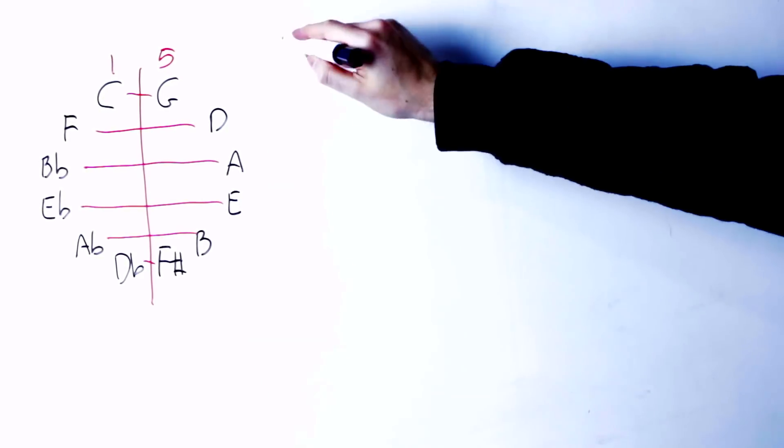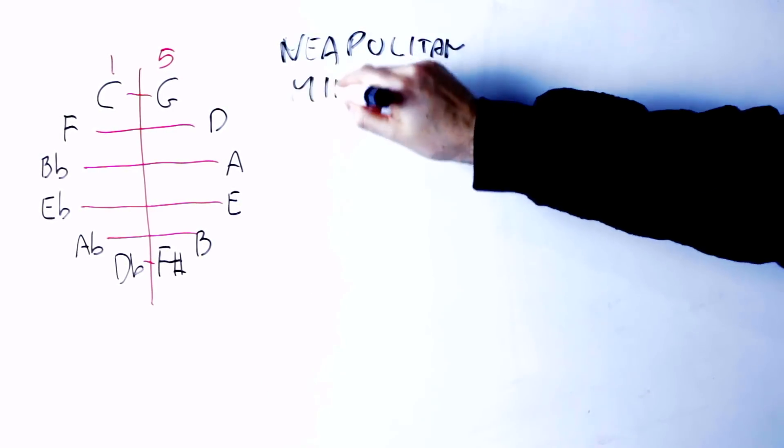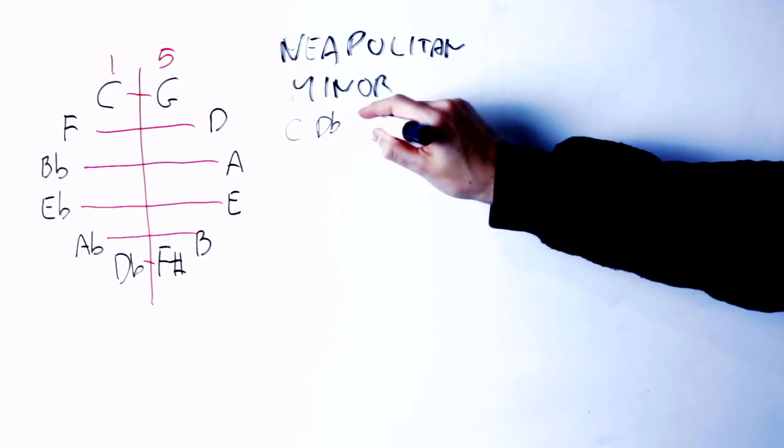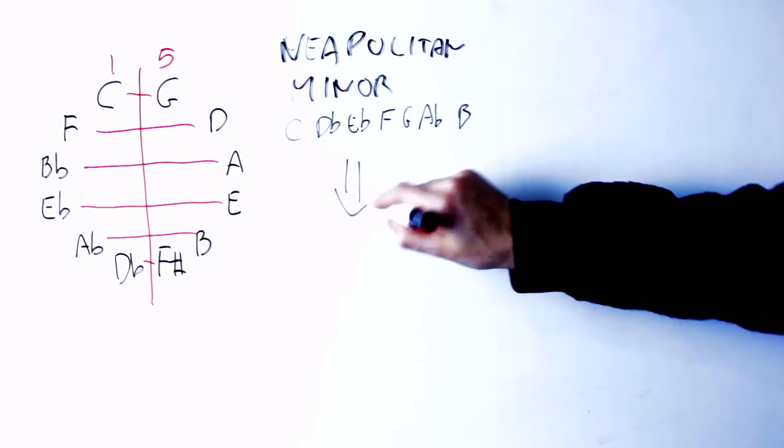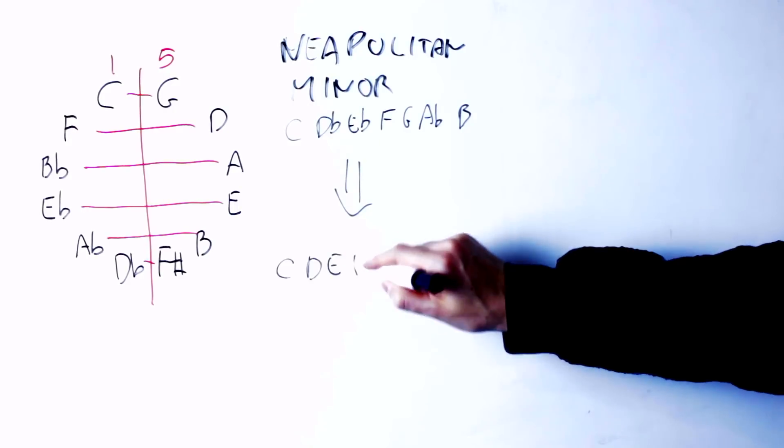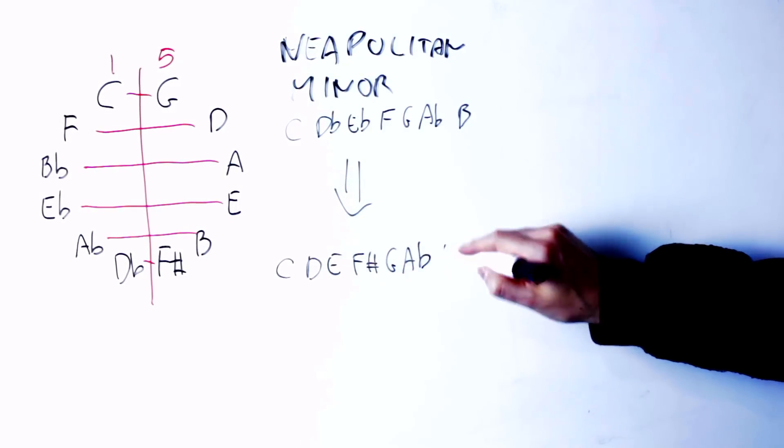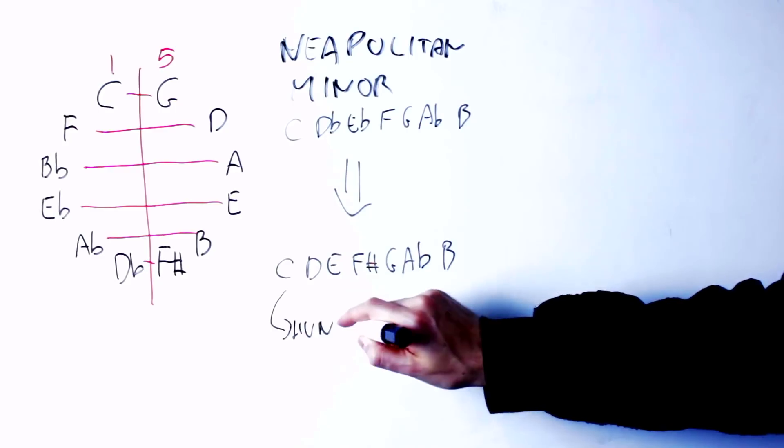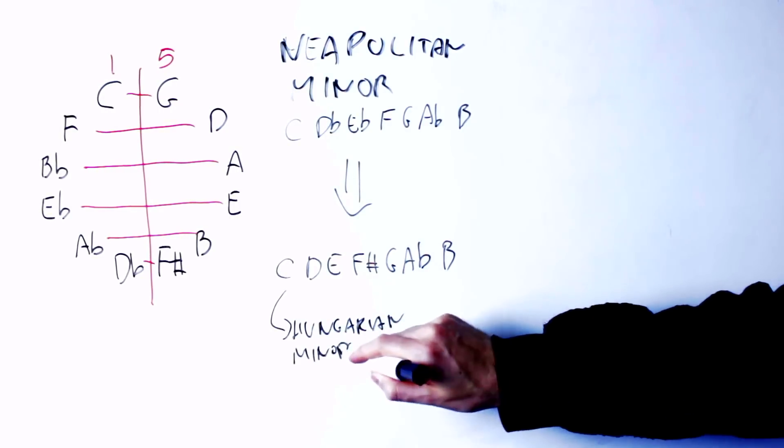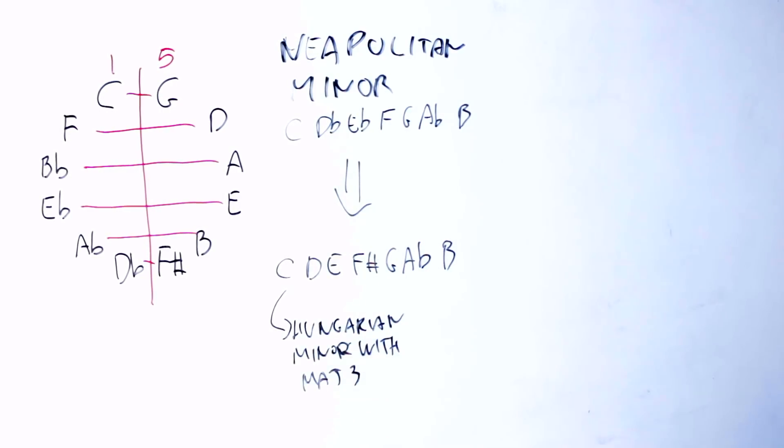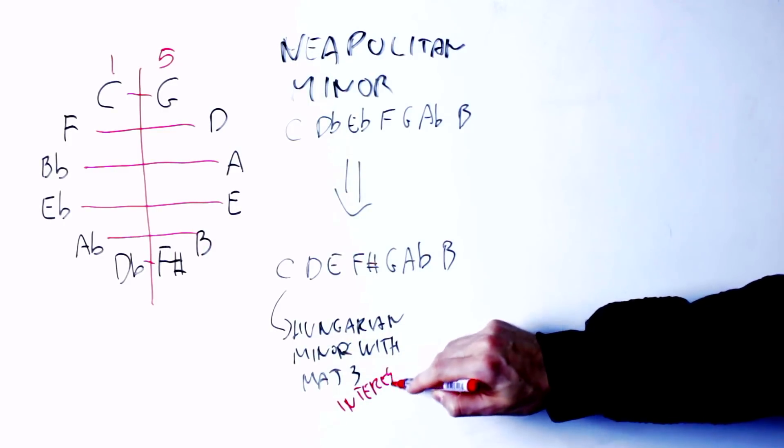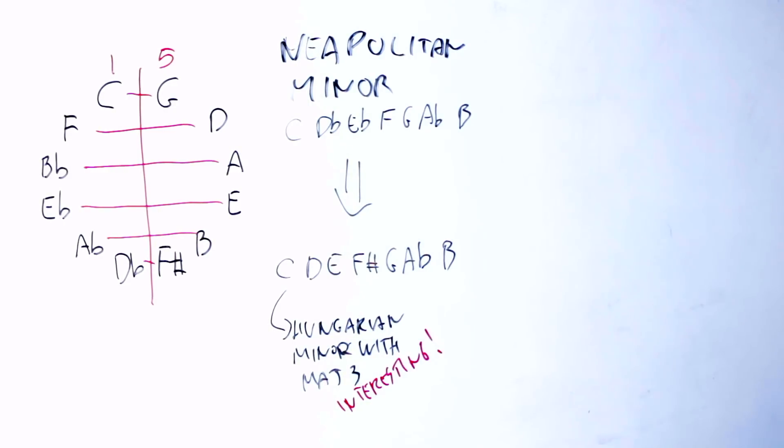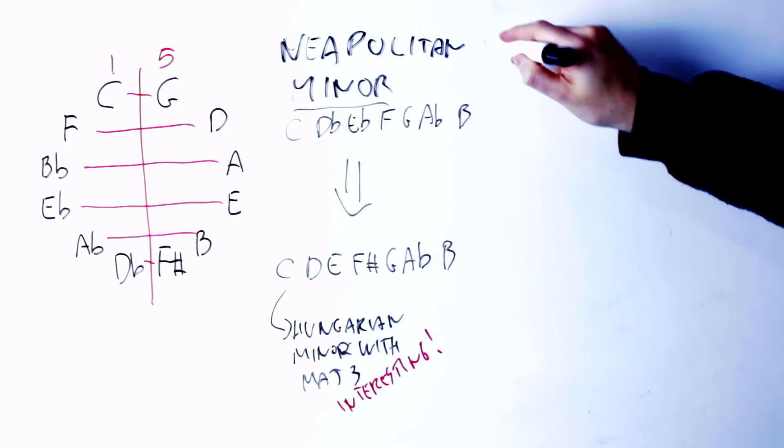Neapolitan scale have a similar situation. The Neapolitan minor scale is C, D flat, E flat, F, G, A flat, B. If I apply my negative harmony and reorder from C, I get C, D, E, F sharp, G, A flat, B. This looks a lot like the Hungarian minor with a major third, so we start to find an interesting connection between the Neapolitan minor and the Hungarian minor. They are close by in the negative harmony, not exactly the same.